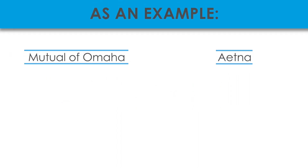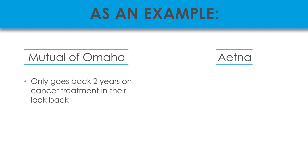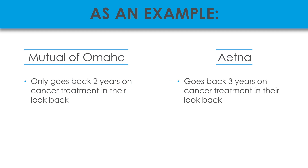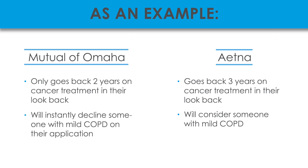As an example, Mutual of Omaha only goes back two years on cancer treatment in their look-back, but Aetna goes back three. However, Aetna will consider someone with mild COPD, while Mutual of Omaha will instantly decline on their application.